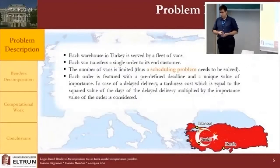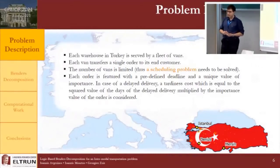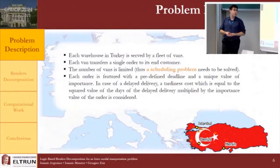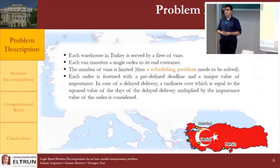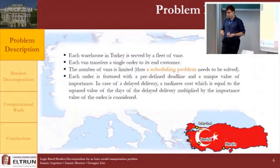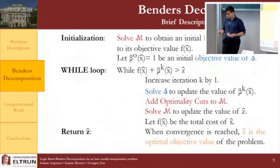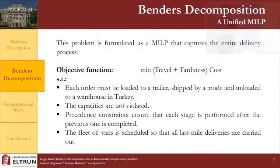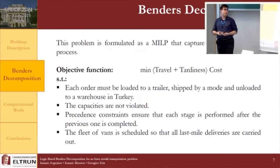For the last-mile delivery stage, each warehouse in Turkey is served by a fleet of vans, each transferring a single order at a time to its customer. Since the number of vans in each warehouse in Turkey is limited, this stage is a scheduling and resource-constraint problem. Each order has a deadline and an importance value; if a delivery is completed after the deadline, a tardiness cost equal to the squared value of days of delayed delivery multiplied by the importance value must be considered in the objective function. We then construct a mixed integer linear program capturing the entire delivery process.